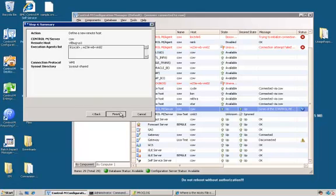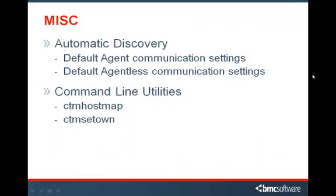After clicking Finish, the entry will be created and appear in the CCM. Regarding automatic discovery: one does not need to define every single remote host in the environment. Simply submitting a job to a new remote host will initiate an automatic discovery process. For every remote host not defined in the CCM topology, Control-M server will first initiate a connection using default Control-M agent communication settings, and if that fails, it will try default remote host communication settings. If the connection is successful, the Control-M agent or agentless remote host will be created and added to the CCM topology automatically.